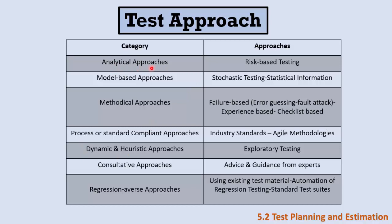The most common testing approaches include: analytical approaches based on analysis, such as risk-based testing; model-based approaches that follow a specific model, such as stochastic testing to gather statistical information; methodical approaches following a specific method, such as experience-based, checklist-based, or fault attack; process or standard compliant approaches, such as agile or IEEE standards; dynamic and heuristic approaches, such as exploratory testing discussed in chapter 4; consultative approaches where guidance is sought from field experts; and regression aversion approaches, which reduce regression risk through automation testing, standard test suites, or existing test material.